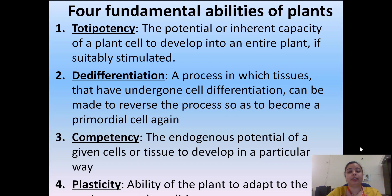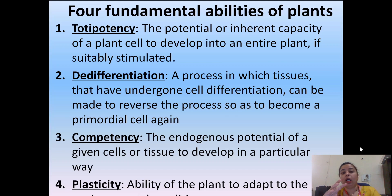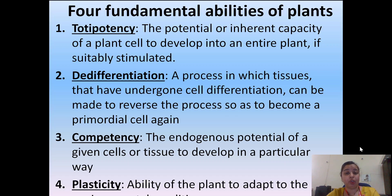The fourth ability is plasticity — the ability of the plant to adapt to environmental conditions. Whatever conditions are given to the plant or plant cell, the cell or plant adapts to those environmental conditions, whether climatic conditions, soil, or without soil, or water. The plant adapts and starts regenerating. These are the four fundamental abilities that are the basis of successful plant tissue culture.